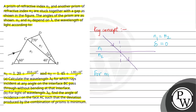Next concept: for minimum deviation in a prism, r1 equals r2 equals A divided by 2, and delta equals 2i minus A, or 2b minus A. The third concept we will use is Snell's law, which states that mu1 times sin(theta1) equals mu2 times sin(theta2).